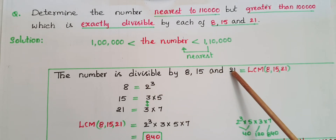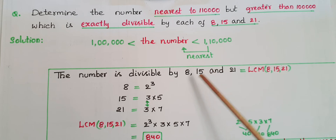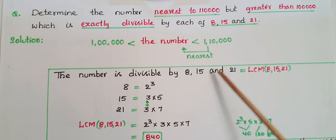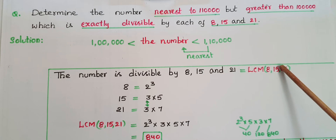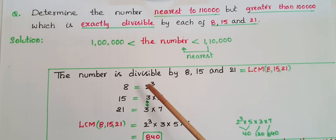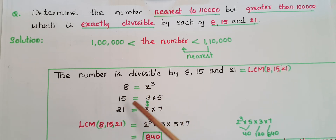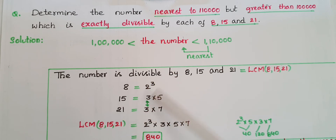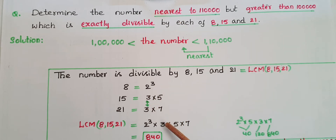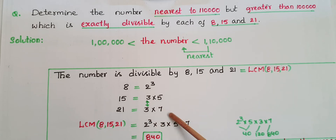When a number is divisible by three numbers, you have to find the LCM of those three numbers. To find the LCM, express each number as a product of prime factors. Eight can be expressed as 2 cubed, fifteen is equal to 3 × 5, and twenty-one is equal to 3 × 7. The only common factor is 3, and the powers are the same, so we write 3 once. The remaining factors are 2 cubed × 3 × 5 × 7.